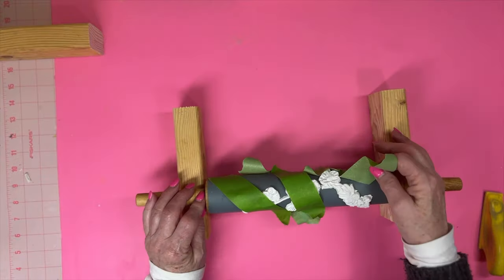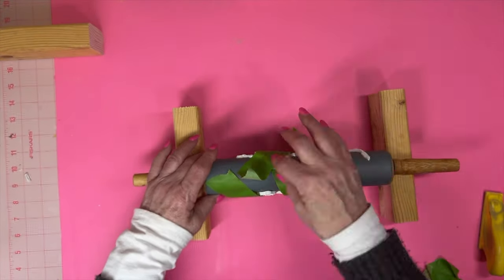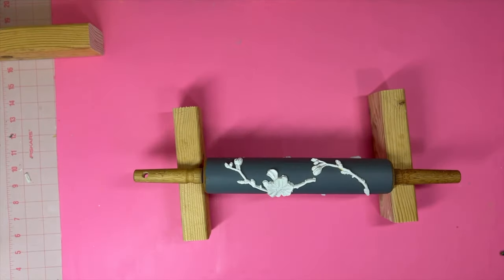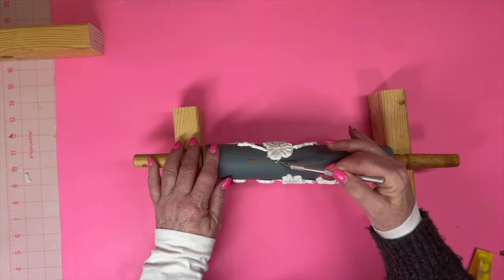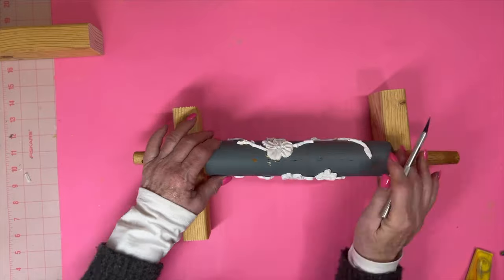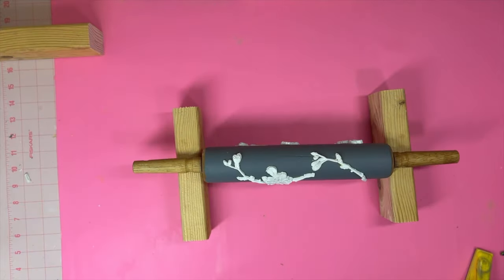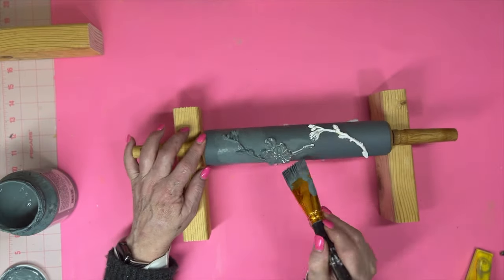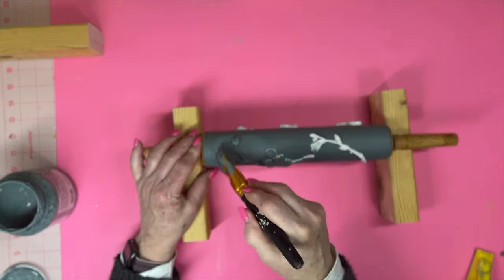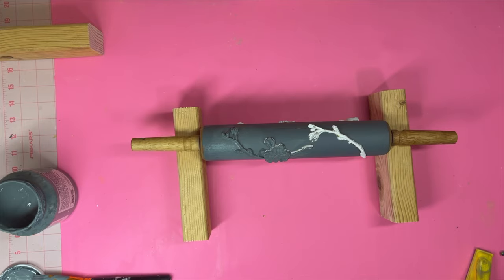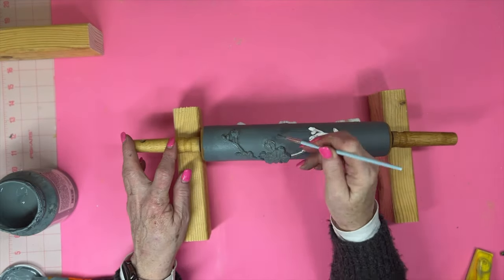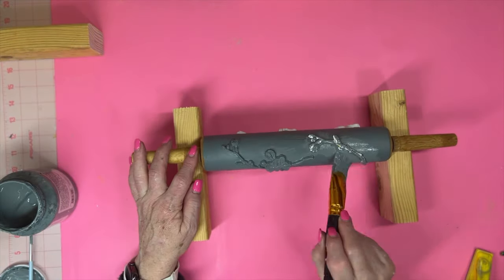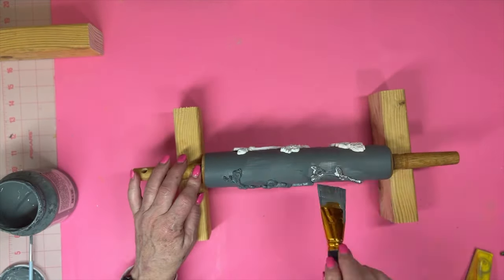So I let it dry overnight and now I'm removing all of the tape. And then I'm just using my X-Acto knife to just clean up some of the edges of the clay. I give the molds a coat of the paint. And it really helps if you have a little tiny paintbrush so you can get in all the nooks and crannies of the molds.